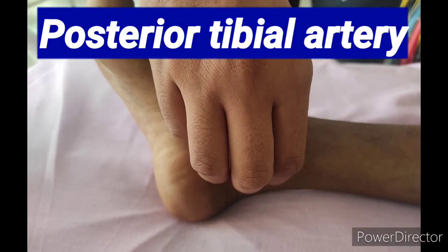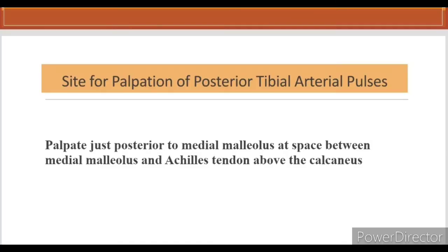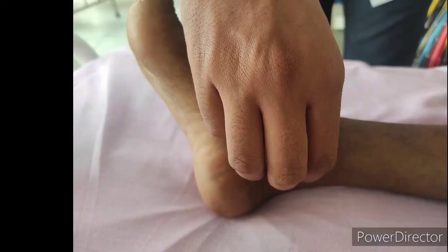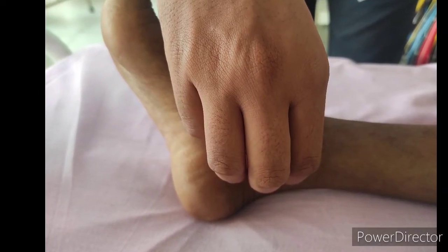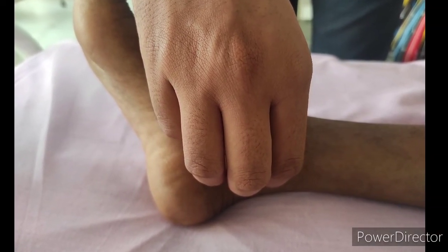For palpation of the posterior tibial artery, we palpate just posterior to the medial malleolus at the space between the medial malleolus and the Achilles tendon above the calcaneus. In this picture you can see I am palpating the posterior tibial artery.